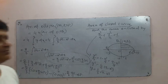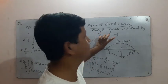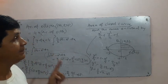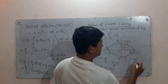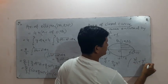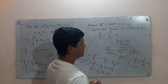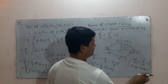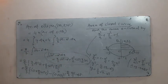Remember the shortcut formula for an ellipse: for x²/a² + y²/b² = 1, the area is always πab. So the area of this ellipse = π × 3 × 2 = 6π. You must remember this formula for all purposes. This is all about the area of a closed curve.